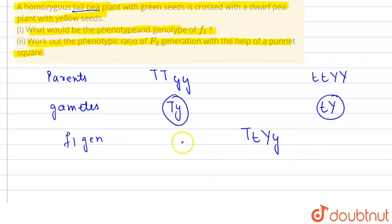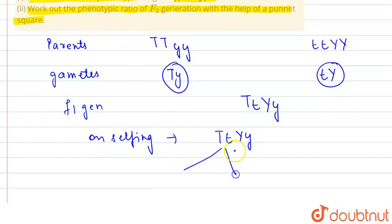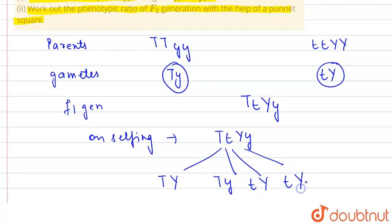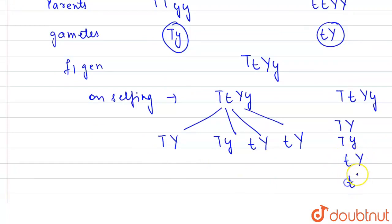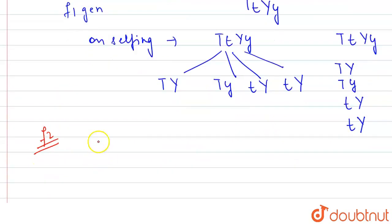Now the F1 generation will be formed. We have capital T, capital T, capital Y, and small y — so the F1 generation is TTYy. Now we have to make the F2 generation. The F1 generation on selfing, that means self-crossing, will give us the progenies. Four types of gametes will be produced: TY, Ty, tY, and ty. Now we have to make the Punnett square for the F2 generation.